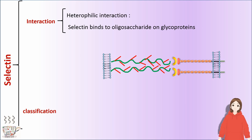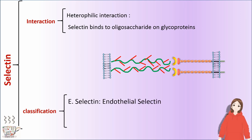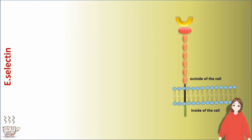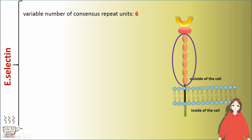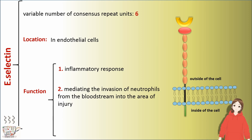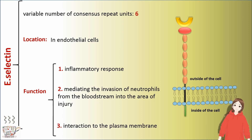Selectin can be divided into three subgroups: E-selectin (endothelial), P-selectin (platelet), and L-selectin (leukocyte). E-selectin has a variable number of six consensus repeat units and is located in endothelial cells. It plays roles in inflammatory response, mediating the invasion of neutrophils from the bloodstream into the area of injury, and in interaction with plasma memory cells.